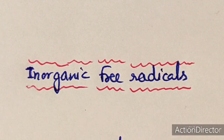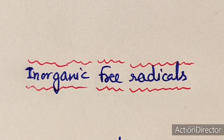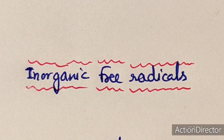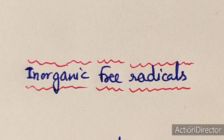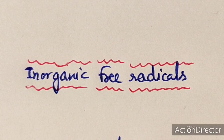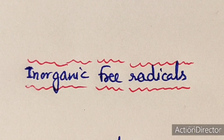Dear students, today we will discuss about the inorganic free radicals. Free radicals are atoms or molecules which contain one or more unpaired electrons. They are very reactive because of the presence of the unpaired electron and they are generally paramagnetic in nature.